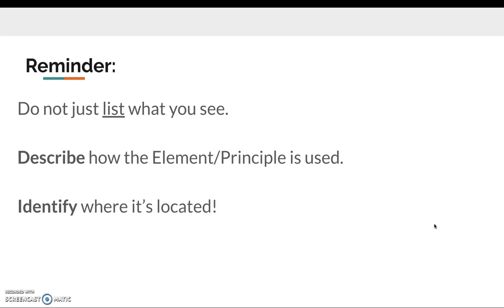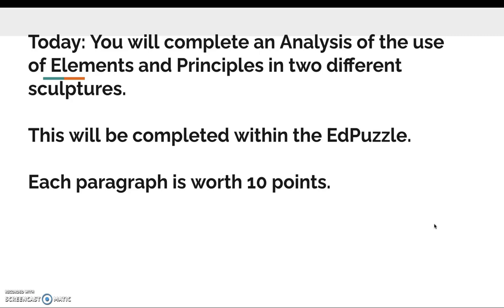So don't just list what you see. Describe how the element or principle is being used and identify where it's located. Today you're going to be completing an analysis of the use of elements and principles in two different sculptures. You're going to be completing this within the Edpuzzle and I've set up this assignment. So each paragraph is worth 10 points. You're only typing two paragraphs, though they are going to be separate.